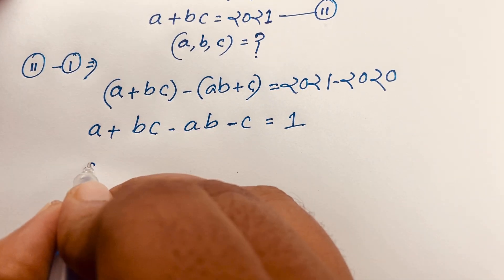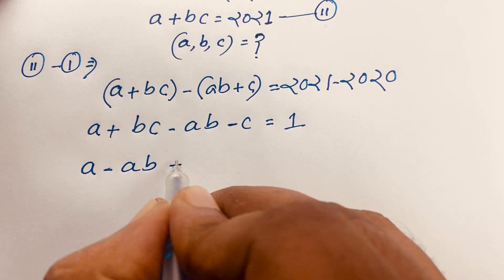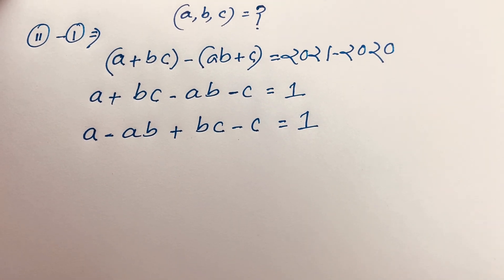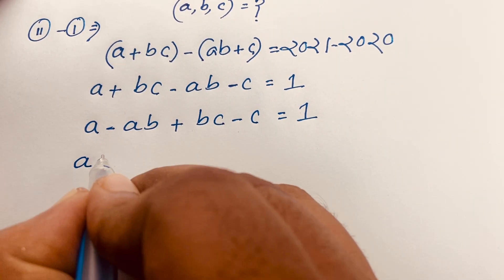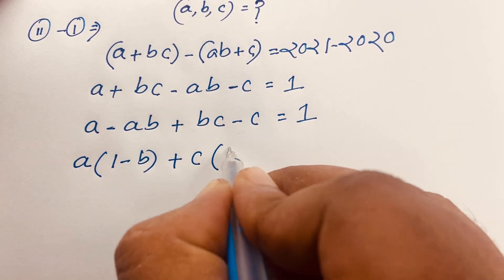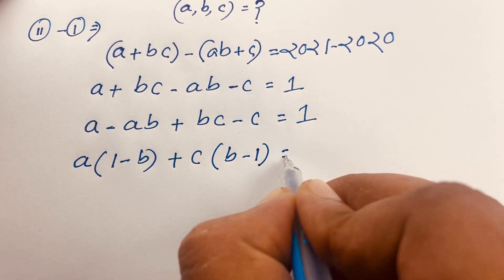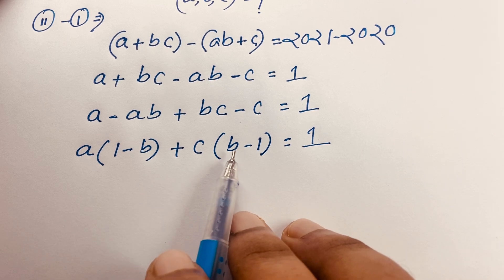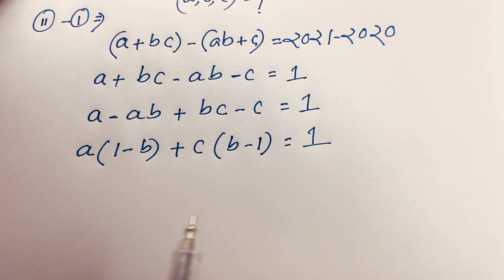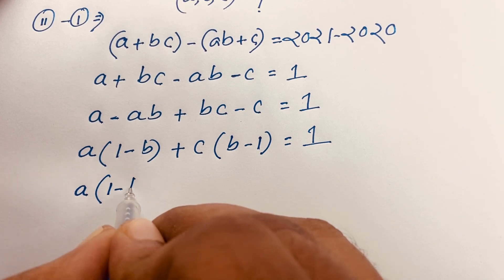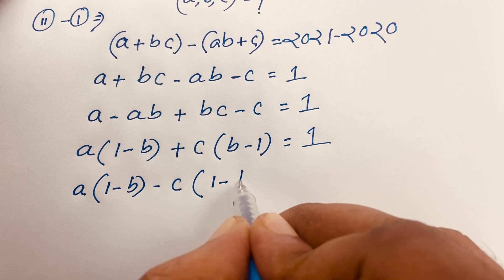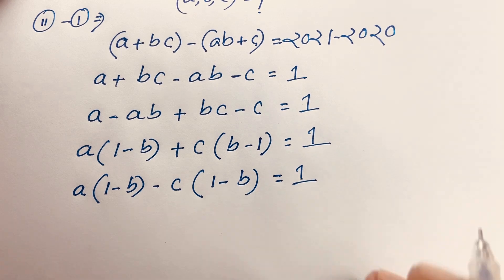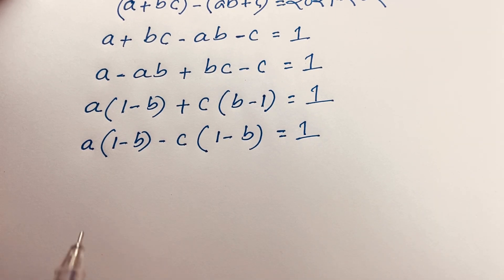This equation becomes a minus ab plus bc minus c equals 1. In this expression, a is common so it gives a(1 - b), and c is common so it gives c(b - 1), equal to 1. Here we have (1 - b) and (b - 1), so taking minus as common from the second term gives a(1 - b) minus c(1 - b) equals 1.